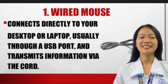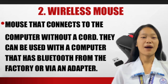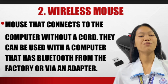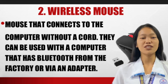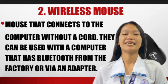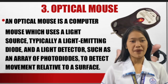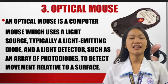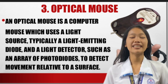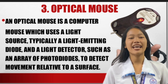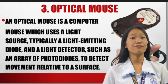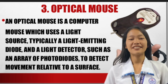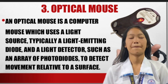The second one is the wireless mouse — a mouse that connects to the computer without a cord. It can be used with a computer that has Bluetooth from the factory or via an adapter. The third one is the optical mouse. An optical mouse is a computer mouse which uses a light source, typically a light emitting diode, and a light detector such as an array of photodiodes, to detect movement relative to a surface.